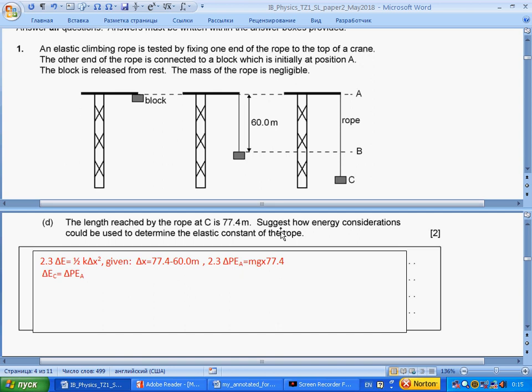The length reached by the rope is given, suggest how energy consideration could be used to determine the elastic constant of the rope. From section 2-3, we see that elastic energy equals ½k·x². Extension is change of length: 7.4 - 60. From 2-3, we also understand that change of potential energy from A to C is mg·ΔH. ΔH is the new length of the rope. These energies are equal because potential energy at C turns into potential energy at A - elastic potential energy, so we can find k.